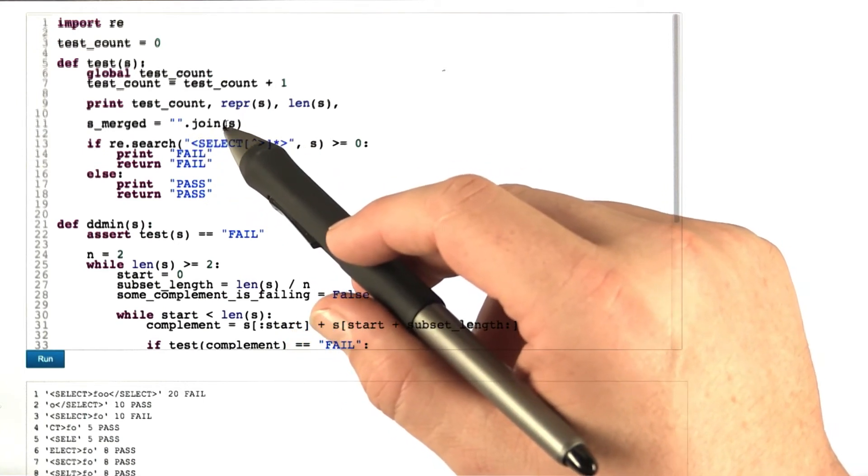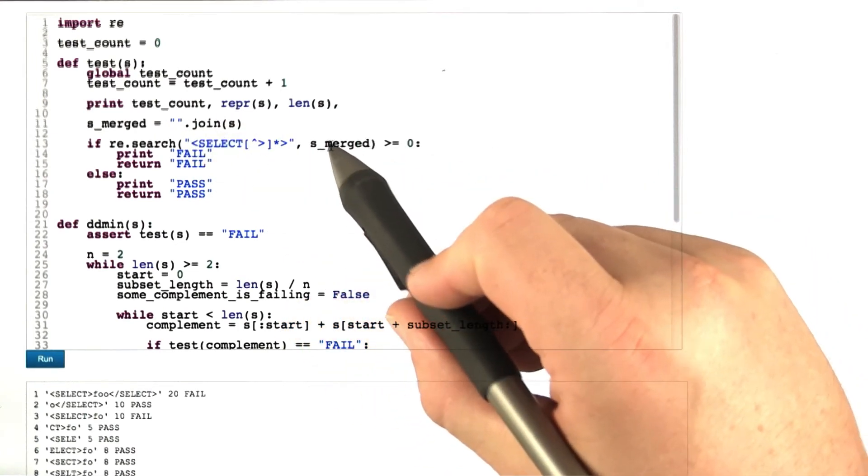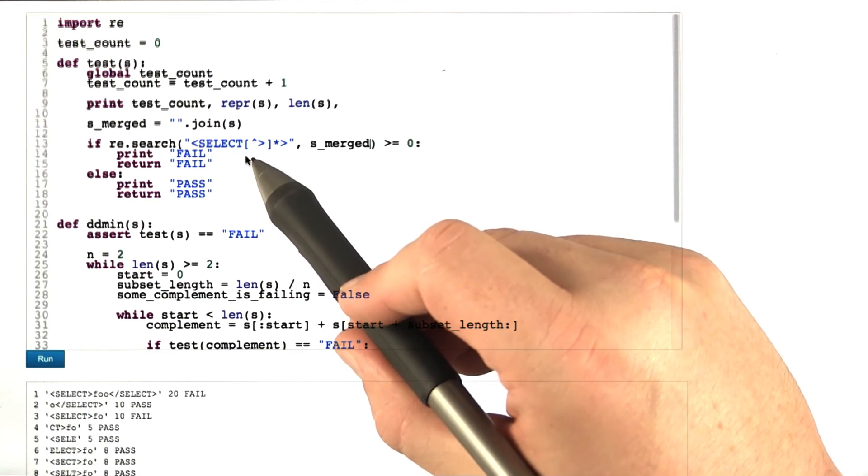So the effect of this is that all the elements that are in S right now will be merged together. And then, in the reconstructed entire string again, we search for the select tag.